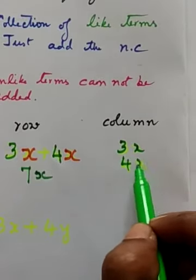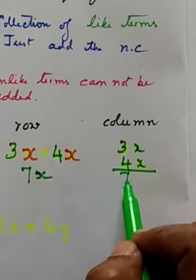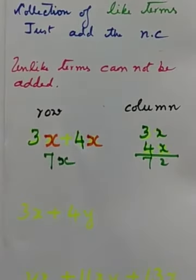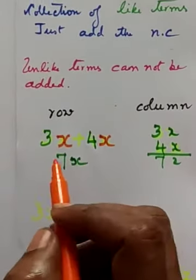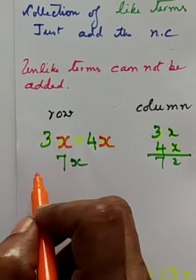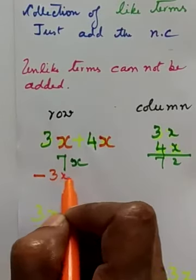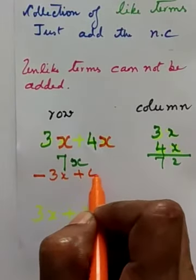4x, that is equal to 7x. What if sign changes? They have given minus 3x? Minus 3x plus 4x.